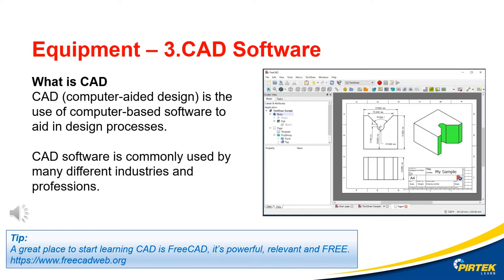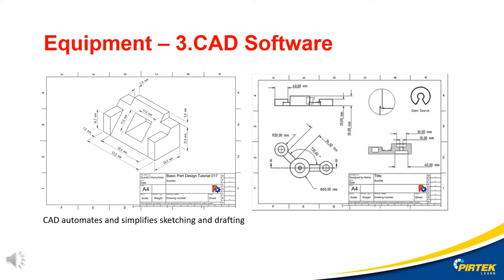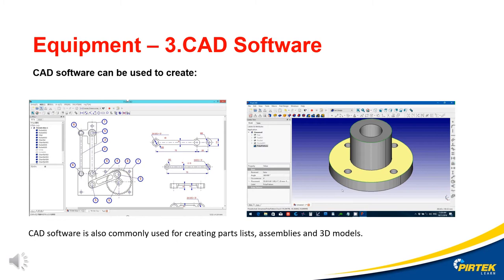CAD is computer-aided design — the use of a computer-based software program to aid in the design and drawing process. CAD software is commonly used by many different industries and professions. If you're new to CAD, a great place to start is using FreeCAD. It's powerful, relevant, and free. CAD software is particularly handy these days because we can go from a 3D model straight to an orthographic or 2D drawing of the component. CAD software is also commonly used for creating parts lists, assemblies, and 3D models.